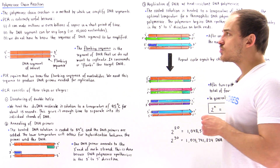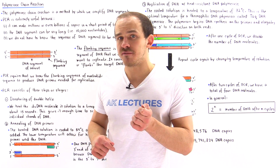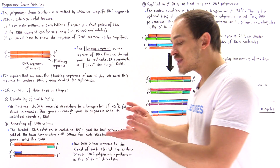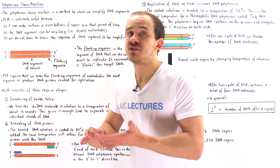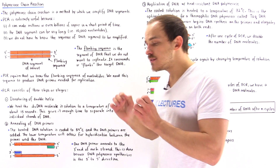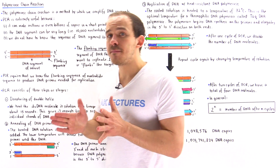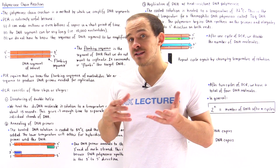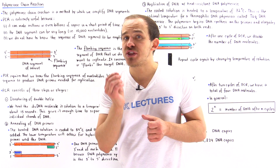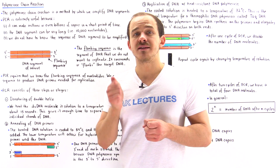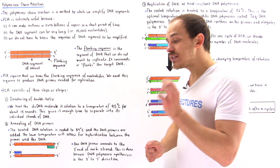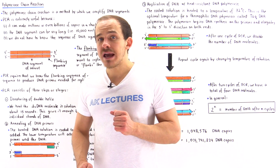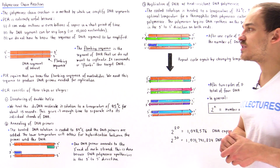The polymerase chain reaction is a very effective method by which we can amplify — make many copies of — a single DNA segment. It's very useful because it allows us a quick way to make millions or even billions of copies of a single DNA molecule. It also allows us to copy a gene or DNA segment that is relatively long, about 10,000 nucleotides in length, and to make those copies without actually knowing the sequence of nucleotides in that gene, as long as we know the flanking sequence. We need that flanking sequence to produce the DNA primers needed for replication.